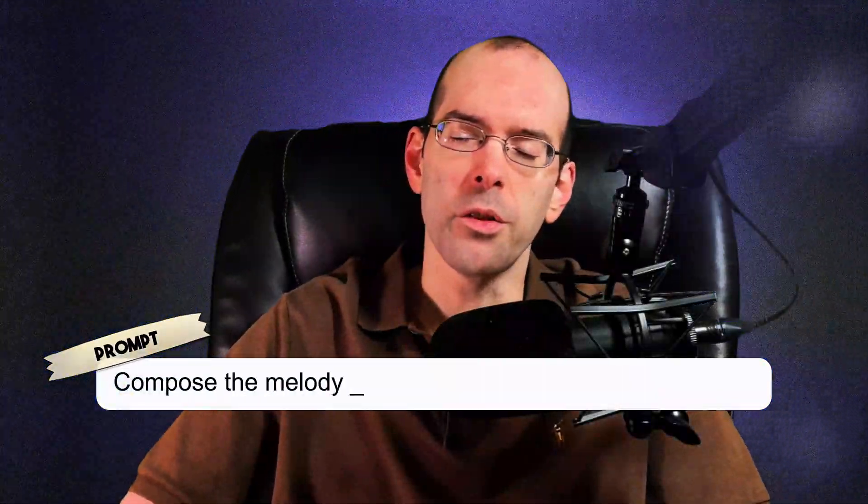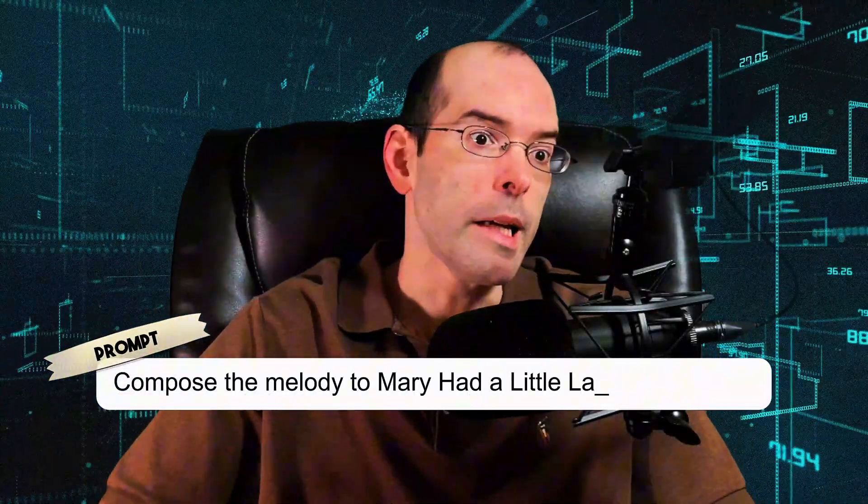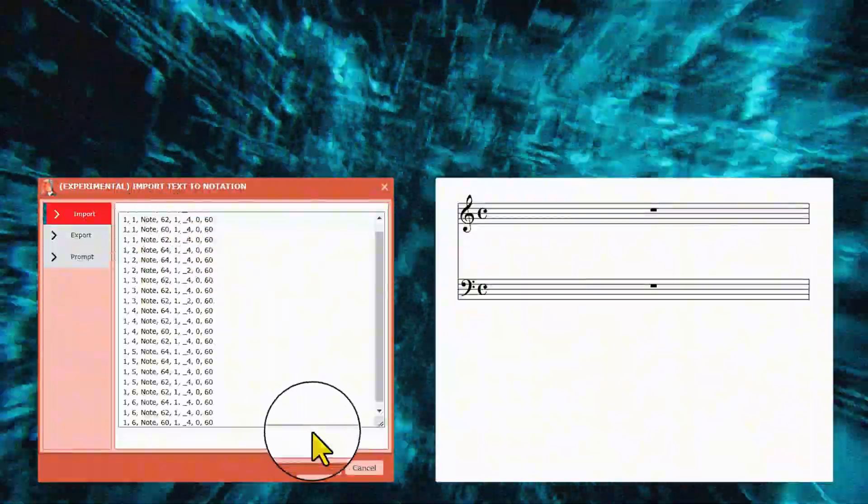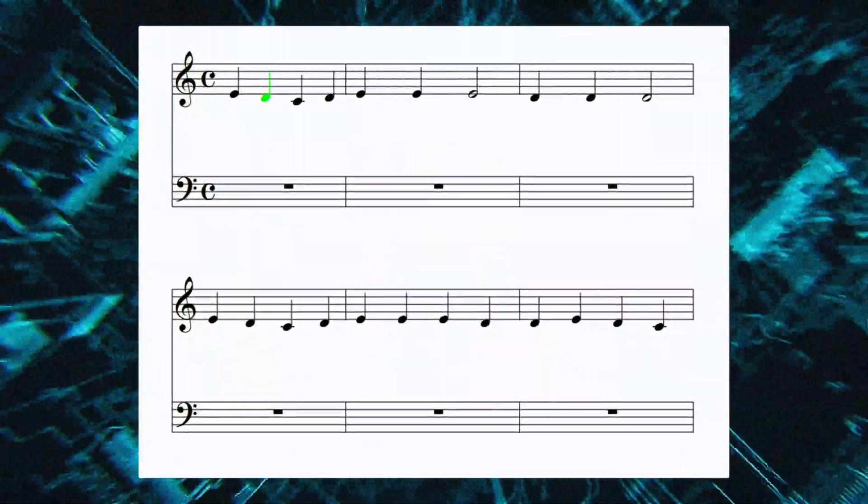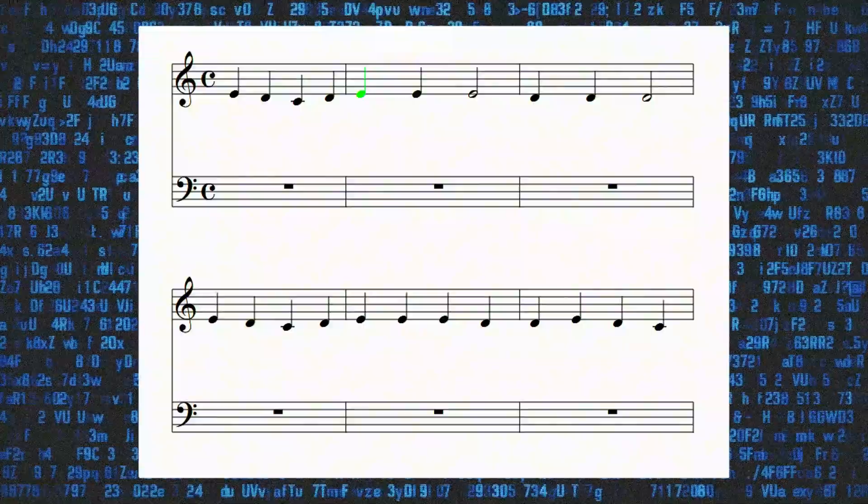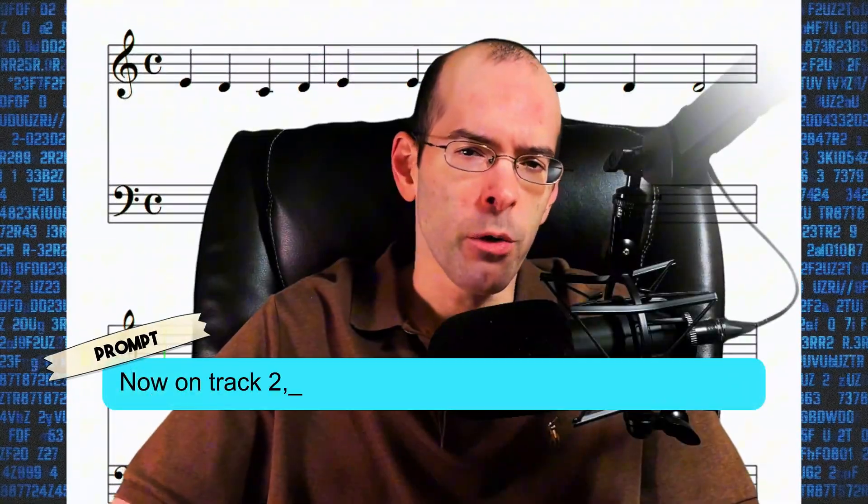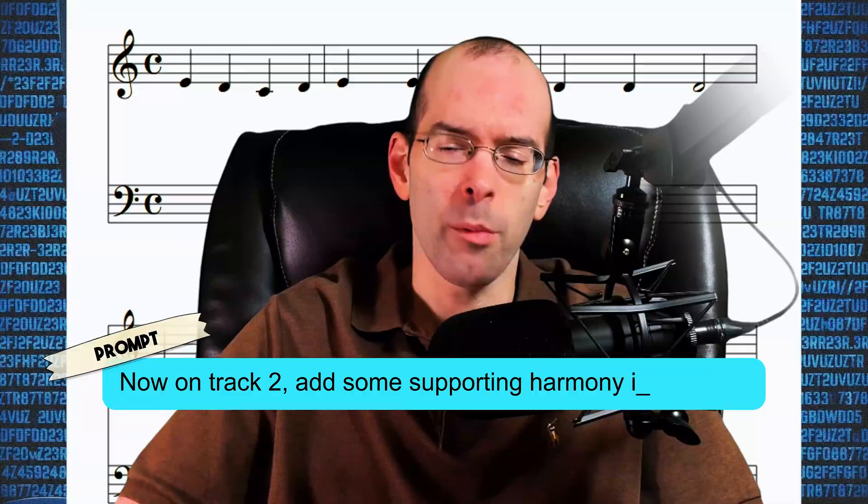Compose the melody to Mary Had a Little Lamb in 4-4 time. Now on track 2, add some supporting harmony in C major.